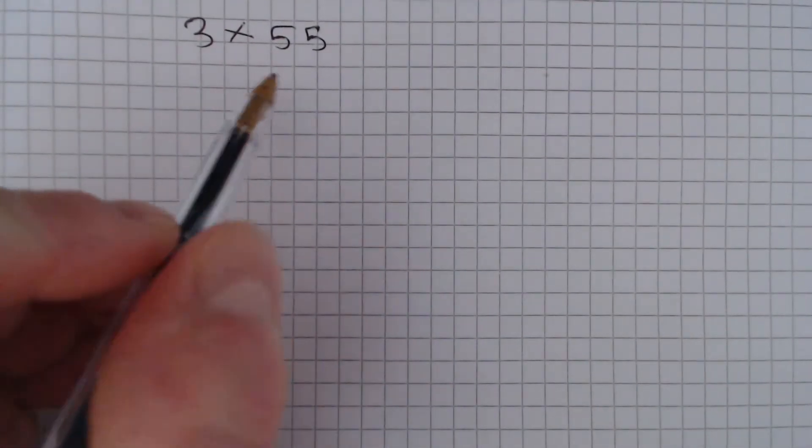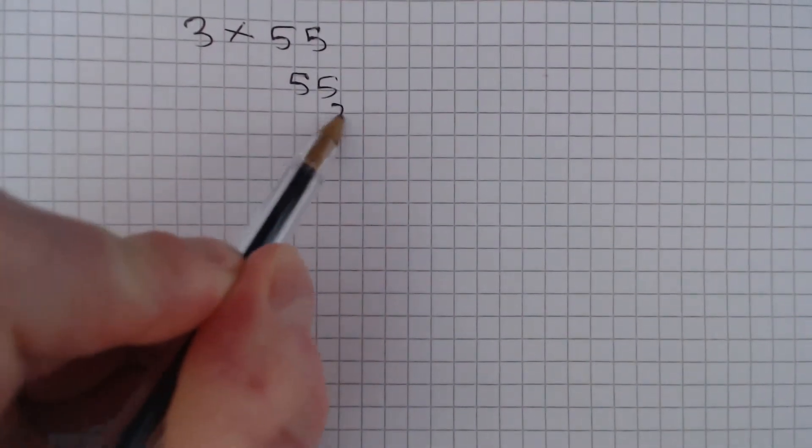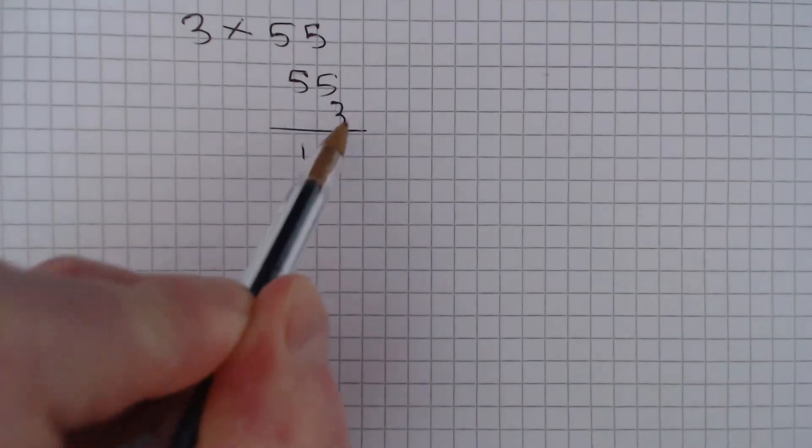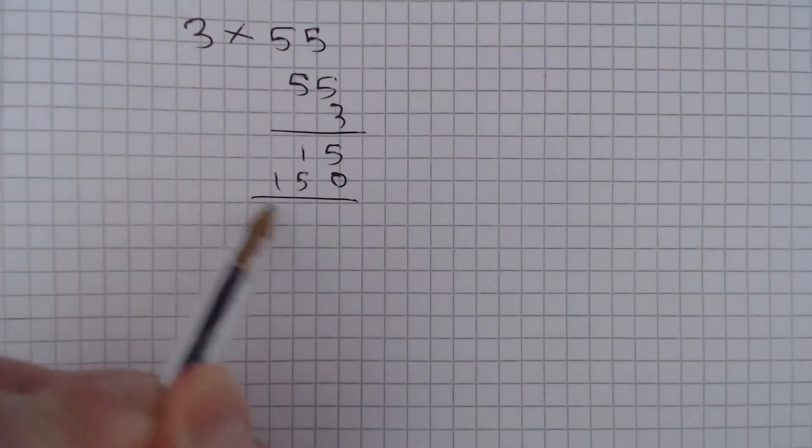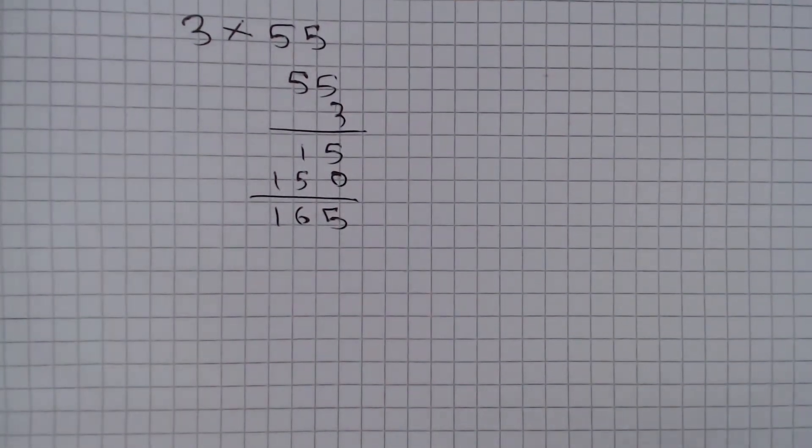So let's first work out how many spaces there are on the coaches. So we are going to do three multiplied by 55. Three times five is 15, three times five again is 15 with a zero and this becomes 165. So we have 165 spaces.